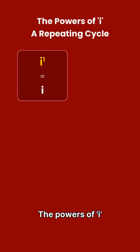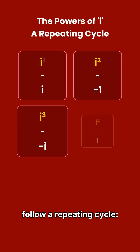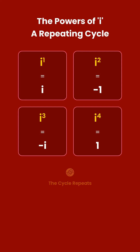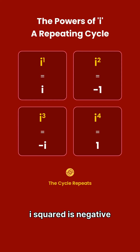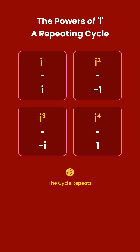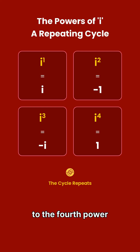The powers of i follow a repeating cycle. i to the power of 1 is i, i squared is negative 1, i cubed is negative i, and i to the fourth power is 1.